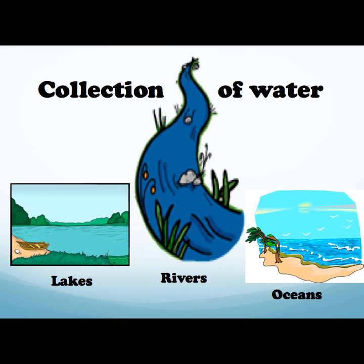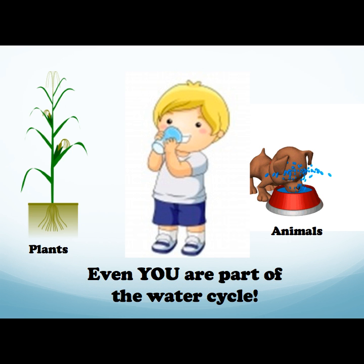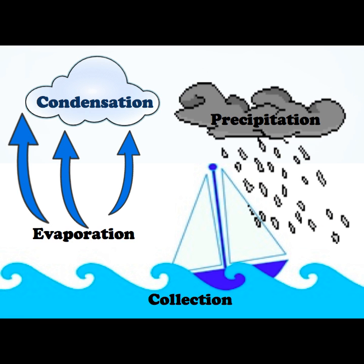The last part of the water cycle is collection. Collection is when that falling rain, hail, sleet, or snow runs into our lakes, rivers, or oceans, or seeps into the ground. That water is then soaked up by plants and drank by animals and even you. We are all part of this never-ending process — the one we like to call the water cycle.